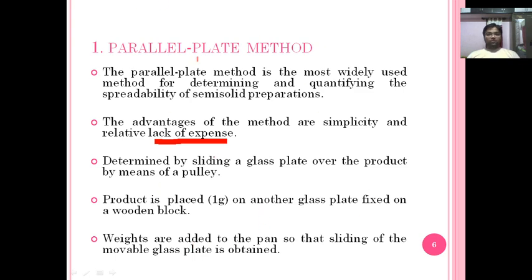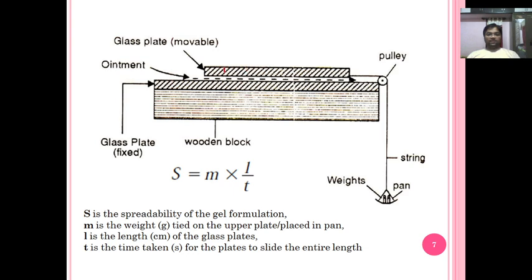Looking at the figure, there are two plates. The upper plate is a movable glass plate attached to a pulley and a pan that carries the weights. The lower glass plate is a fixed one, placed over wooden blocks. Weights are added progressively to the pan, and we measure how much weight is required to pull the upper glass plate across the lower one, with the semi-solid preparation placed between them.